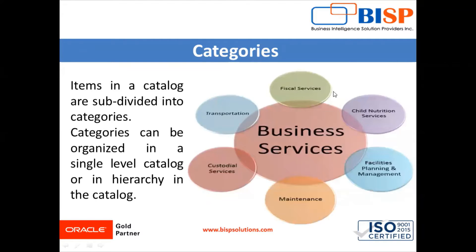Categories are defined when items in a catalog are subdivided. Categories can be organized in a single level catalog or in a hierarchy. For example, in a Business Services catalog, categories include transportation, fiscal services, child nutrition services, facilities planning and management.